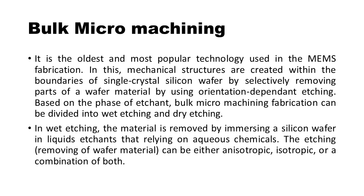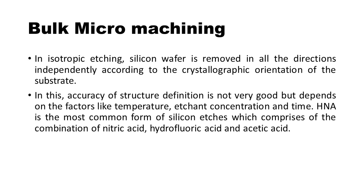In wet etching, the material is removed by immersing a silicon wafer in liquid etchants that rely on aqueous chemicals. The etching can be either isotropic, anisotropic, or a combination of both. In isotropic etching, the silicon wafer is removed in all directions independently according to the crystallographic orientation of the substrate. The accuracy of structure definition is not very good, but depends on factors like temperature, etchant concentration, and time.